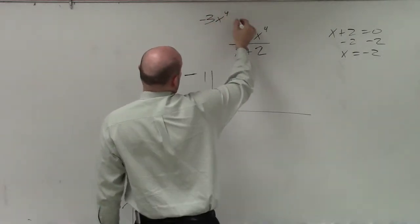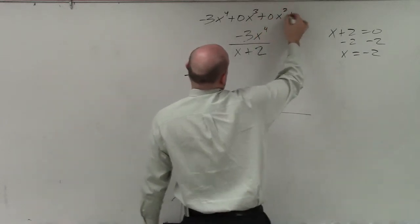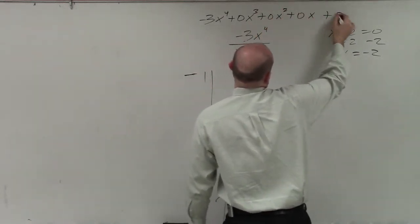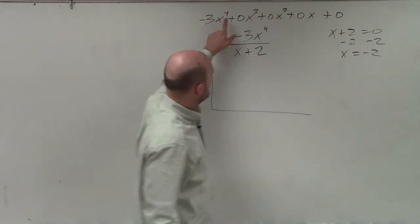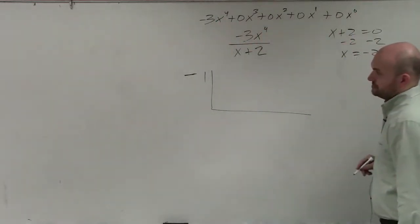So I have -3x^4 + 0x^3 + 0x^2 + 0x + 0. So remember, you always want to go in 4, 3, 2, 1, x to the 0, down to 0. So I'm going to have -3, 0, 0, 0, 0.